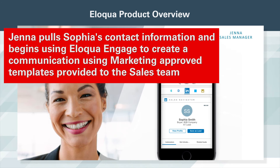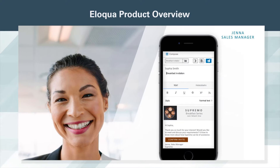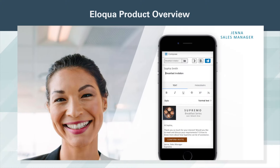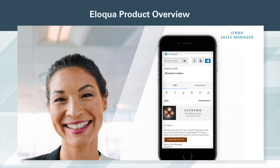Jenna pulls Sophia's contact information and begins using Eloqua Engage to create a communication using marketing-approved templates provided to the sales team. She personalizes an email based on the latest information in Profiler and sends an invite asking Sophia to meet and discuss how Supremo can help. She later receives a reply from Sophia, who agrees to meet and suggests Jenna come to her office the following day to discuss a contract.